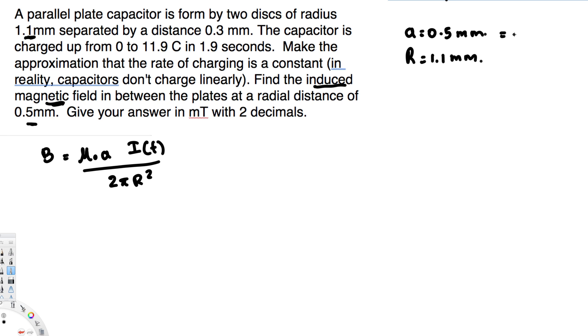Now in meter that's going to be 0.5 times 10 to the power of minus 3 meter. And this is going to be 1.1 times 10 to the power of minus 3 meter. Okay. Now we have these two values. We need mu naught.